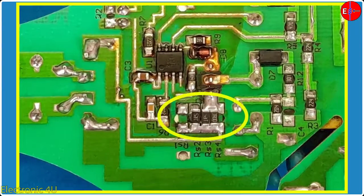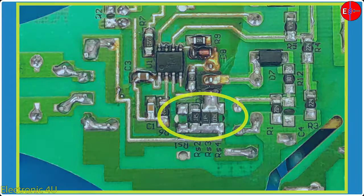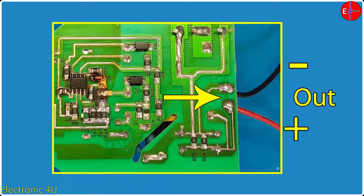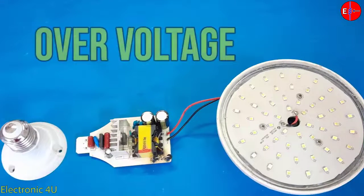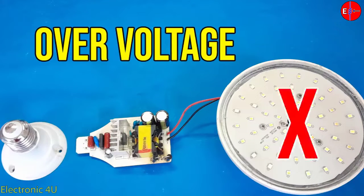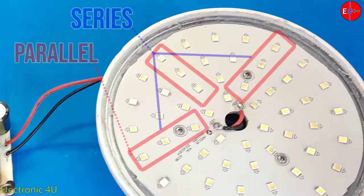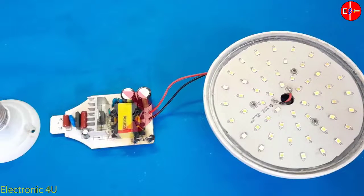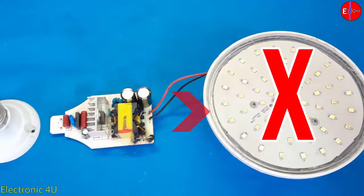So if we can change the shunt resistance value, we have actually changed the feedback value. This change causes the IC to perform switching according to the received feedback and reduce the output voltage of the circuit. As I said before, the most important reason for LEDs burning out is overvoltage in the circuit. The LEDs are in series and parallel, and their total voltage is equal to the voltage in the circuit. But changing the output voltage causes more voltage to reach the LEDs and, as a result, the LEDs get damaged.